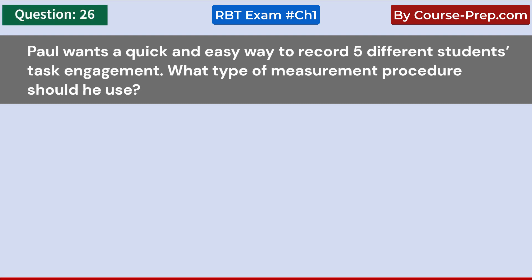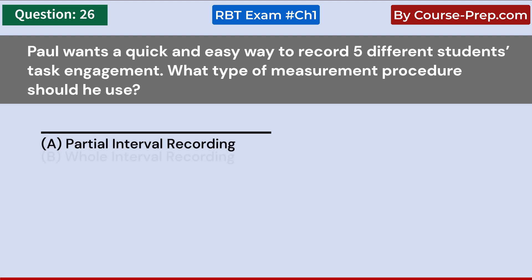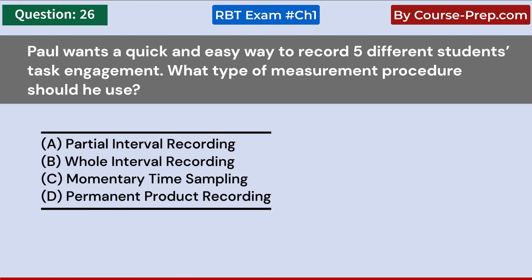Paul wants a quick and easy way to record five different students' task engagement. What type of measurement procedure should he use? A. Partial interval recording. B. Whole interval recording. C. Momentary time sampling. D. Permanent product recording. Answer C: Momentary time sampling.